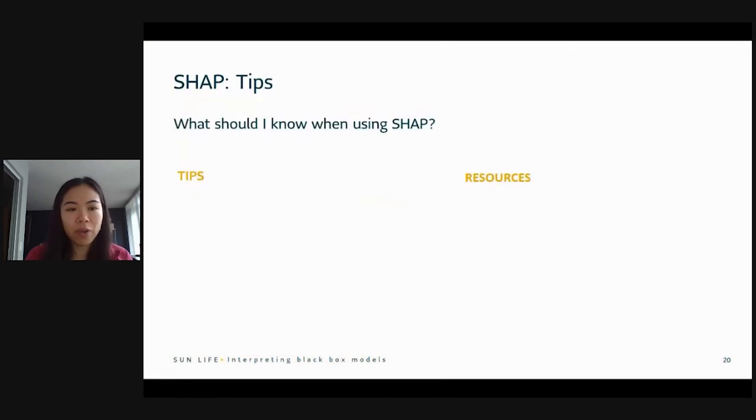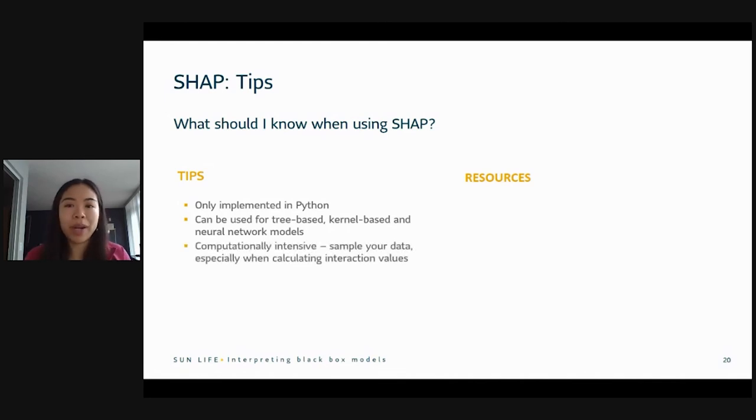All right, so what to know before using SHAP? Well, first, it's only implemented in Python, which shouldn't be a problem because we're all here at PyCon India. It is model agnostic and can be used for any type of model, tree-based, kernel-based neural networks. The one con with SHAP, though, compared to LIME, is that it is computationally intensive, and that's because it's calculating the marginal contribution over all the possible ordering. So that is pretty hefty. And so a tip is to sample your data. You don't need to apply SHAP to all of your data, but you can just do it on a sample to get an idea of the feature importance. And especially when you're calculating those interaction values, it will get a bit intensive.